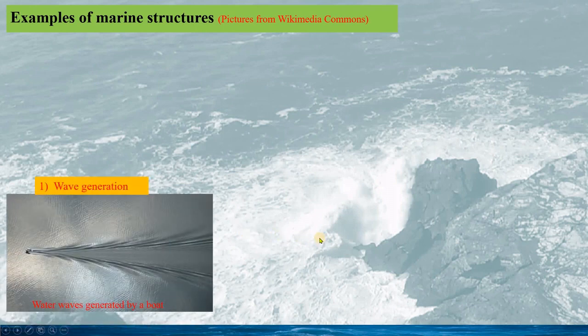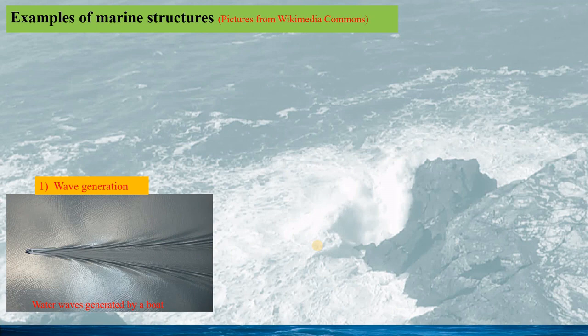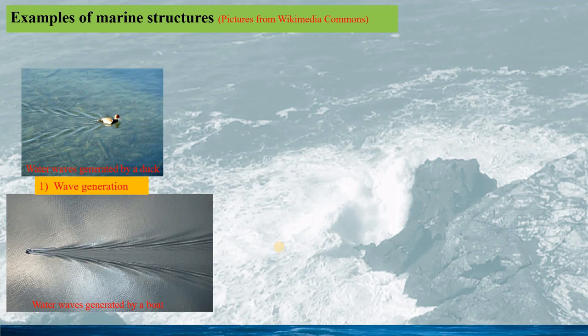We have many different types of marine structures, including the wave generation by a boat travelling on the sea. We can see the shape of the wave, which is called the Kelvin ship wave. The Kelvin ship wave could have a similar pattern, especially in deep water. Another example is the wave generation by a dock, which has a similar wave pattern as that of the ship.